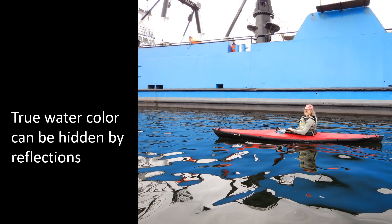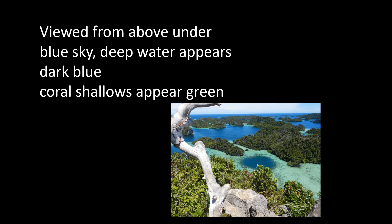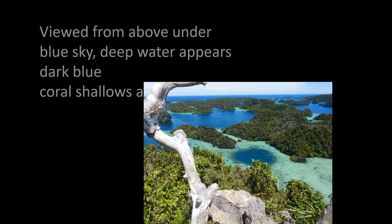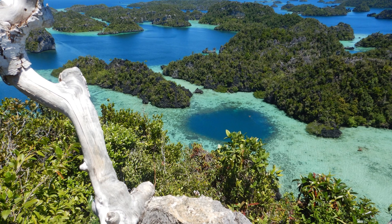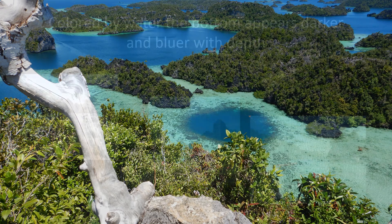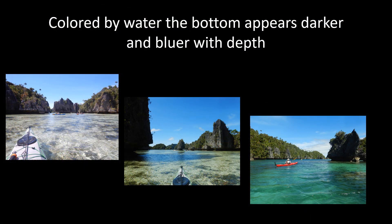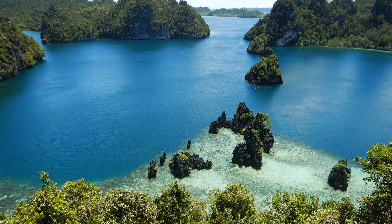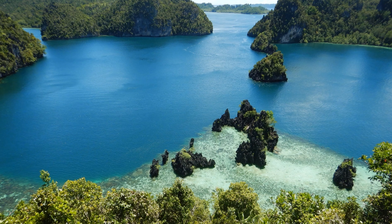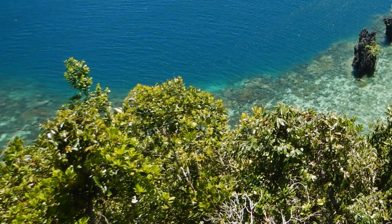The true water colour is only visible if reflections don't hide it. Seen from a hilltop in Indonesia, looking down under a blue sky, the deep water appears blue, while the coral reefs show through the shallow water tinted with pale blue-green. This is the filter effect — water appears bluer and darker with depth. Although you see the colour of the coral and sand through the shallowest water as slightly blue-green, the drop-off edge shows dark blue-green dropping into dark blue.